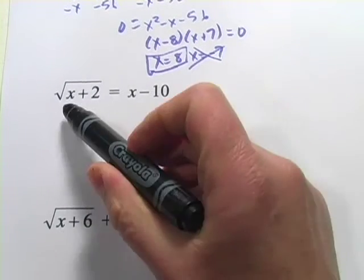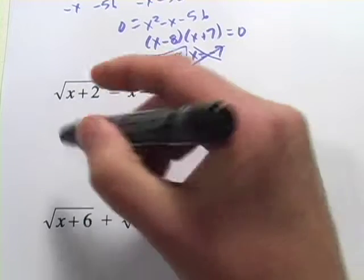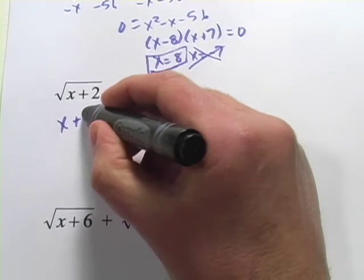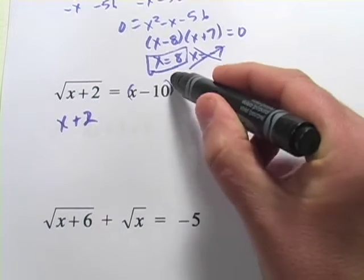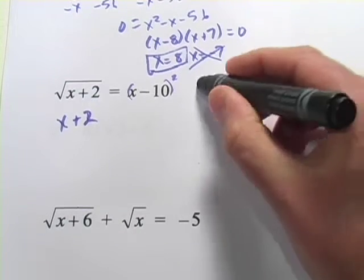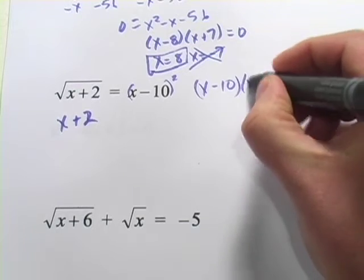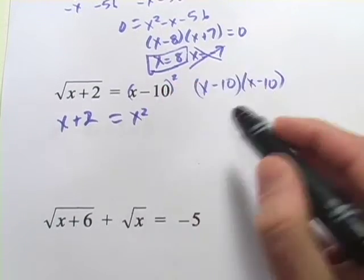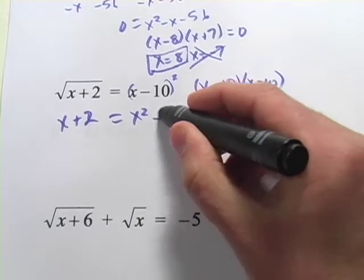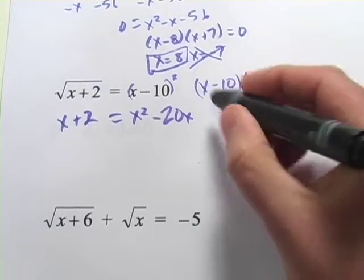Let's try this next one. So if we square the left here, we would just get x plus 2. When we square the right, we're going to have to FOIL it. It's this quantity squared or multiplied by itself. So x minus 10 times x minus 10. And if you FOIL that, you should get x squared minus 10x minus 10x. So that's minus 20x plus 100.